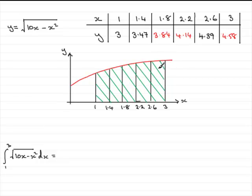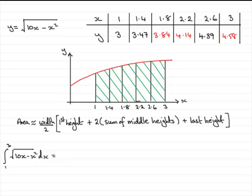And by the trapezium rule, what you should know is that the area, which is going to be basically this integral here, is the width of a strip divided by 2, and it'd be the first height plus twice the sum of the middle heights plus the last height.